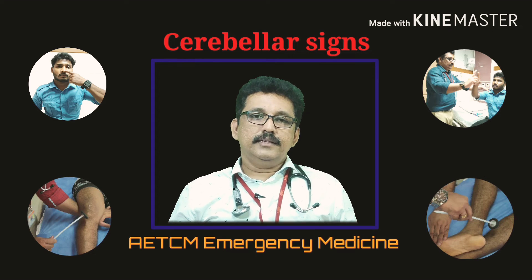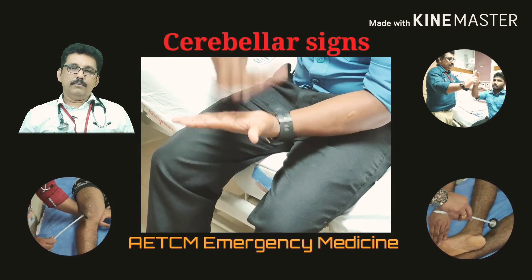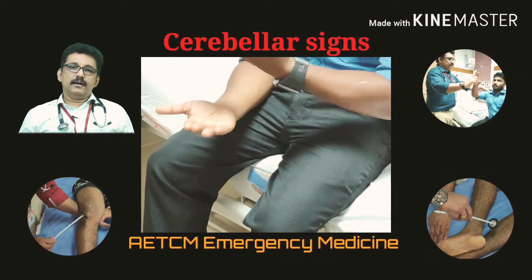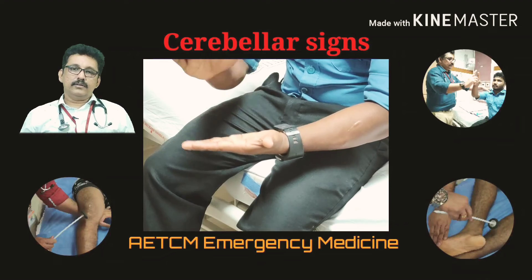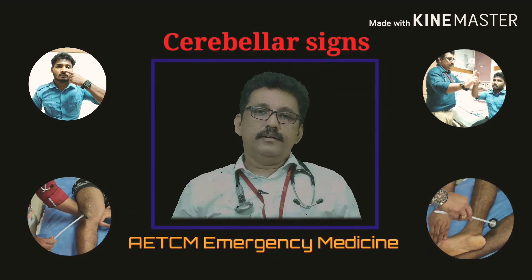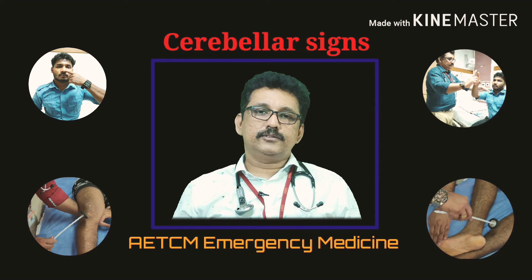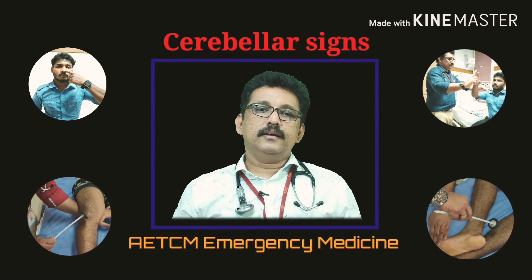Dysdiadochokinesia is the inability to perform rapid alternating movements. Normally a person can pronate and supinate the hand rapidly without difficulty. A patient with a right-sided cerebellar disorder will not be able to do this on the right side and will make many errors. This is called dysdiadochokinesia.